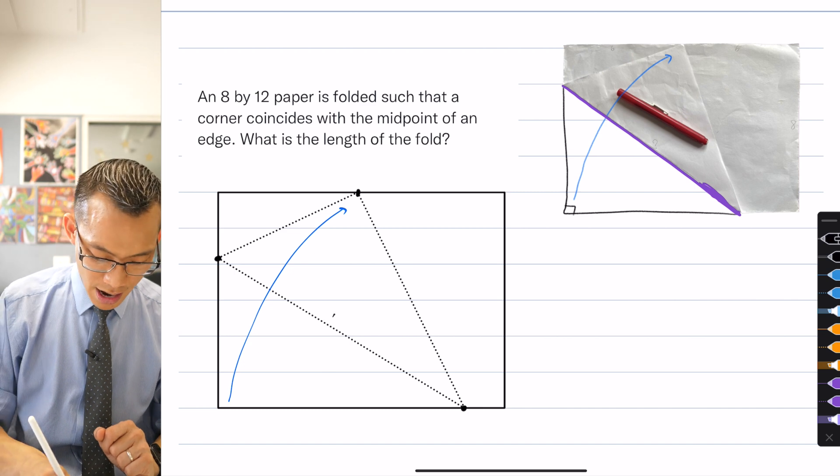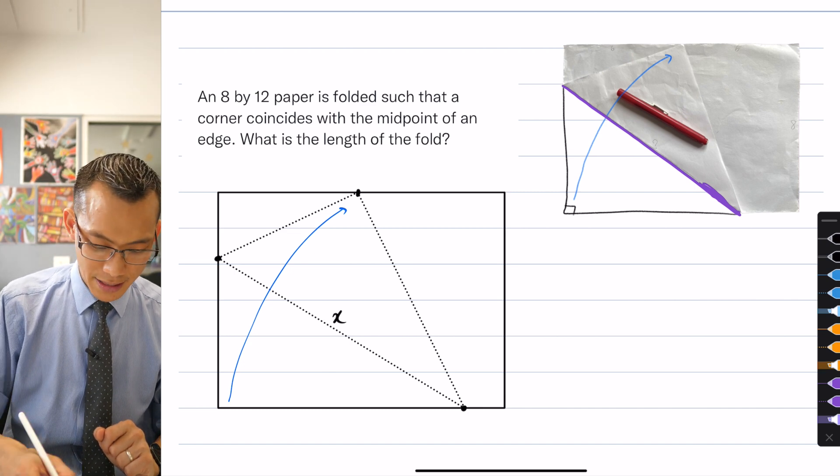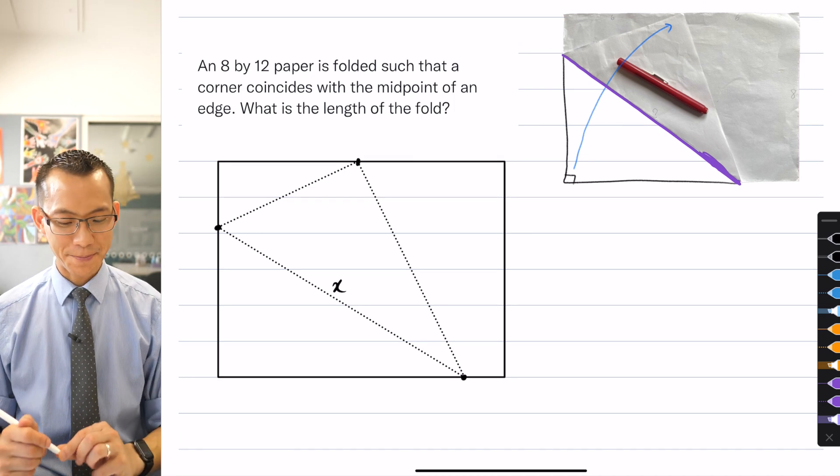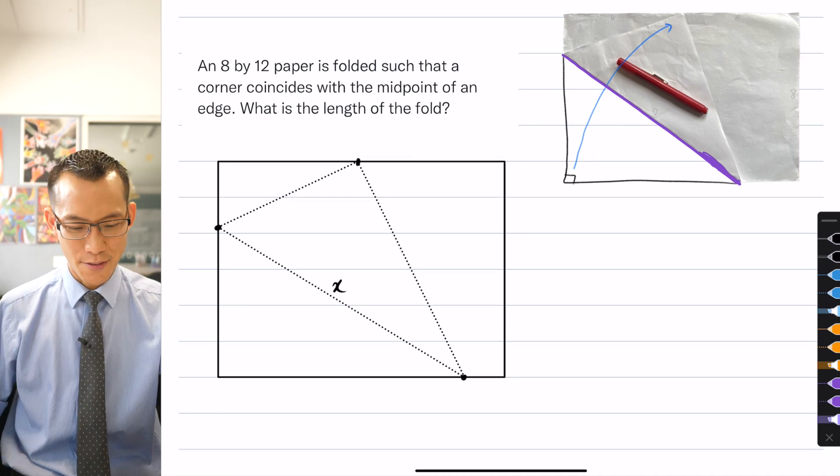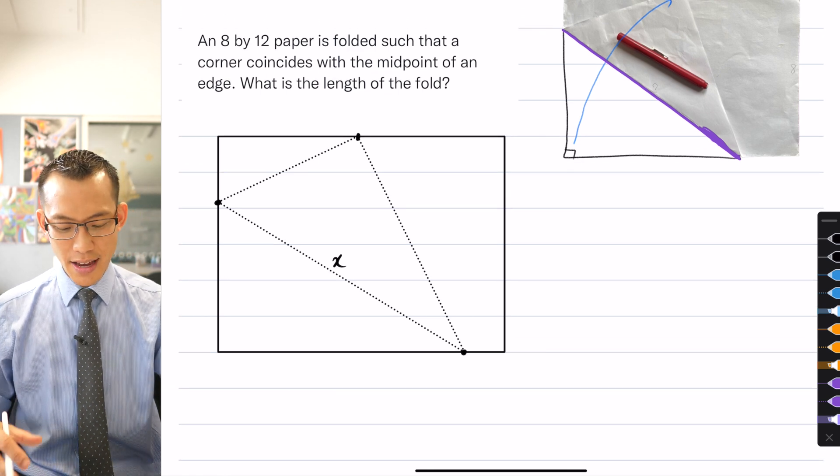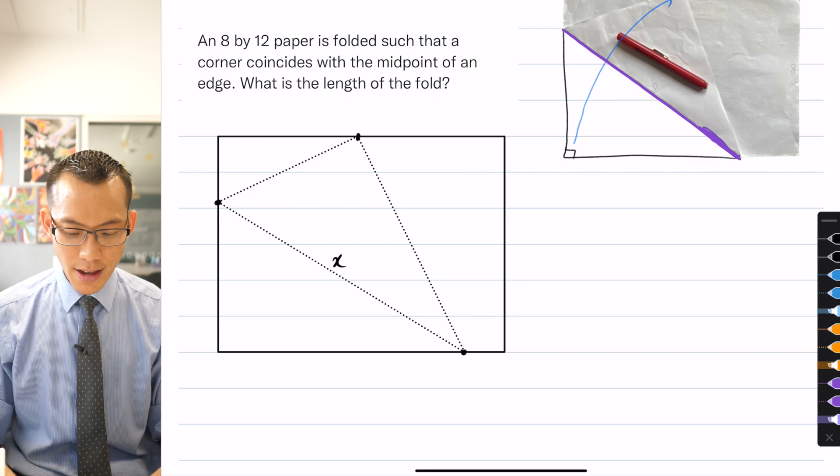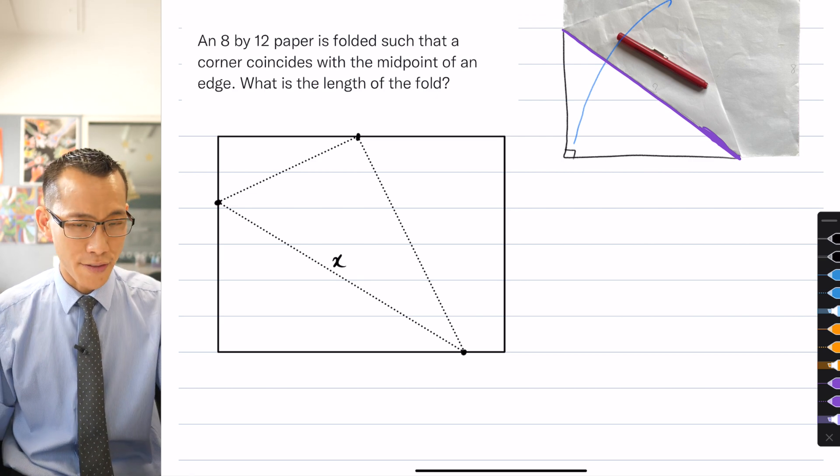And so since that's the unknown, I'm going to call that x and I better get this blue fold arrow out of the way because it's going to cloud our diagram. So what's the length of this fold? What I want to start doing is assembling the information that I know and then trying to find what x is by relating all this piece of information together.